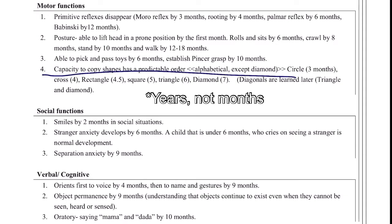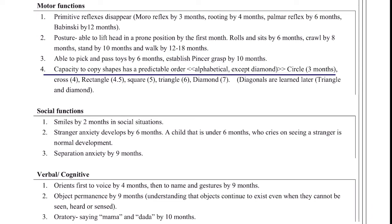It is essential to know the order in which children learn to copy shapes — it is simply alphabetical, except for the diamond, as diagonals are learned later. Circle by three months, cross by four months, rectangle by four and a half months, square by five, then triangle, then diamond. This is needed for USMLE Step 1 and 2.